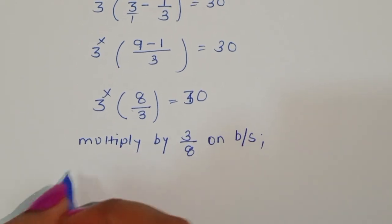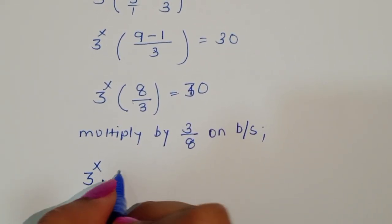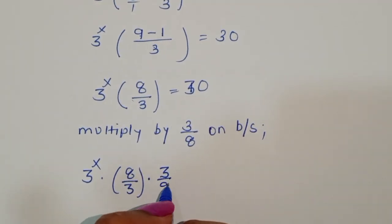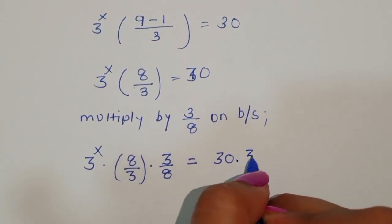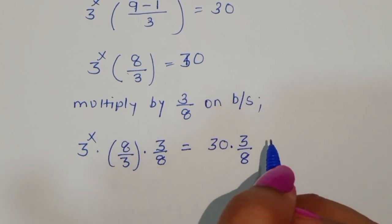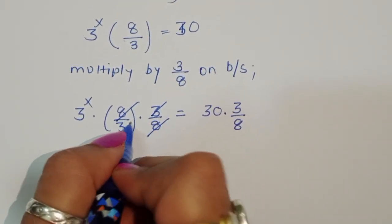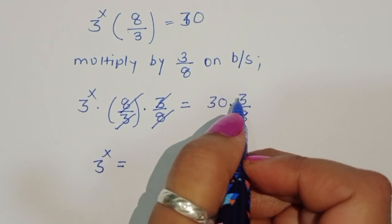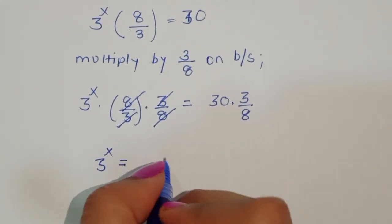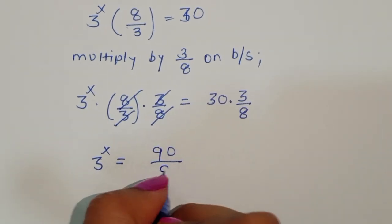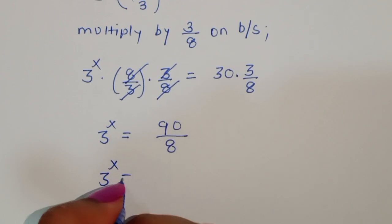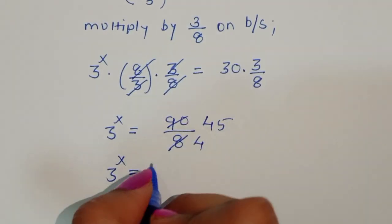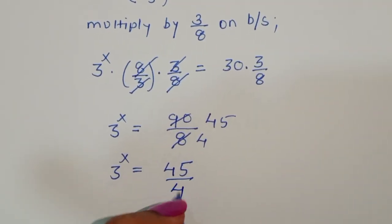We have 3 power x times 8 by 3 equals 30. To isolate 3 power x, we multiply both sides by 3 by 8. So 3 power x equals 30 times 3 by 8, which gives 90 divided by 8, simplifying to 45 by 4. So 3 power x is equal to 45 by 4.